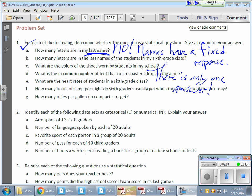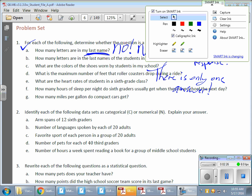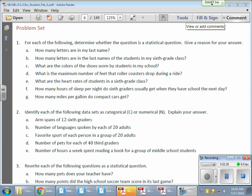If you wanted to make this statistical, you could change the question to ask: How many letters are in everyone's last name? Or how many letters are in the last names of students in sixth grade? If you do that, it becomes statistical because now there's more than one answer and the data will vary.